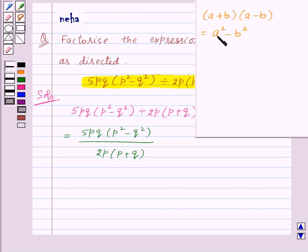So using this identity we can write this expression as 5pq into p plus q into p minus q upon 2p into p plus q.